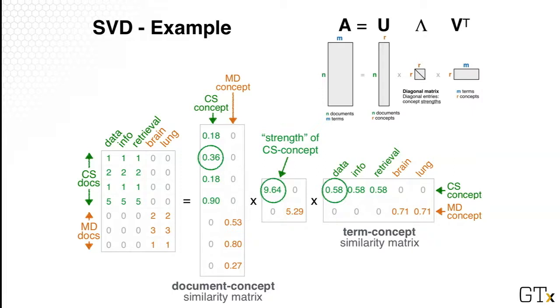So there's another way to interpret these matrices. The first one, the U matrix, we can call it a document concept similarity matrix. So the values here encode similarity. The higher the value, the more similar a document is to a concept. And similarly, for the V matrix, we can also call it a term concept similarity matrix. So the bigger the value, the more similar a term is to a concept.